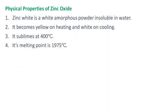Physical properties of zinc oxide: Zinc white is a white amorphous powder insoluble in water. It becomes yellow on heating and white on cooling. It sublimes at 400 degrees Celsius, and its melting point is 1975 degrees Celsius.